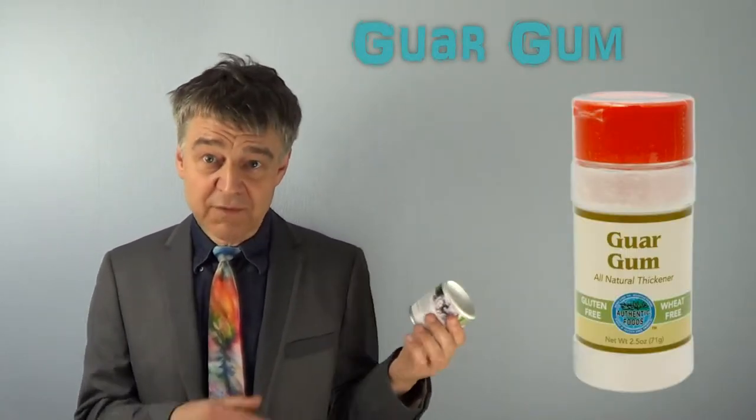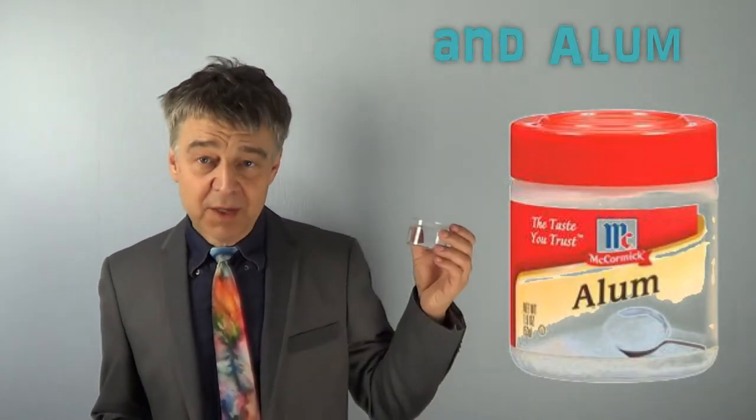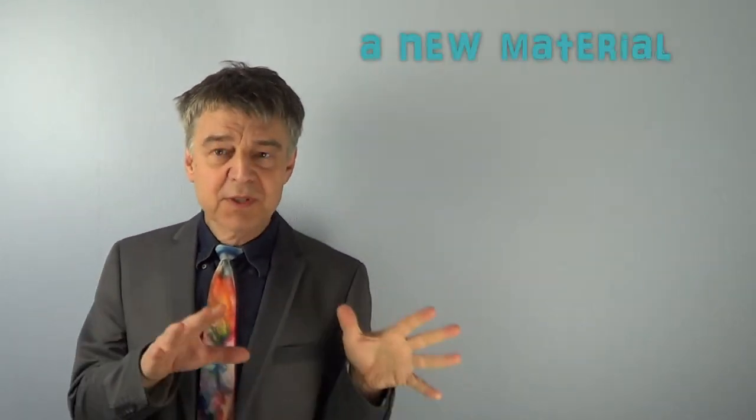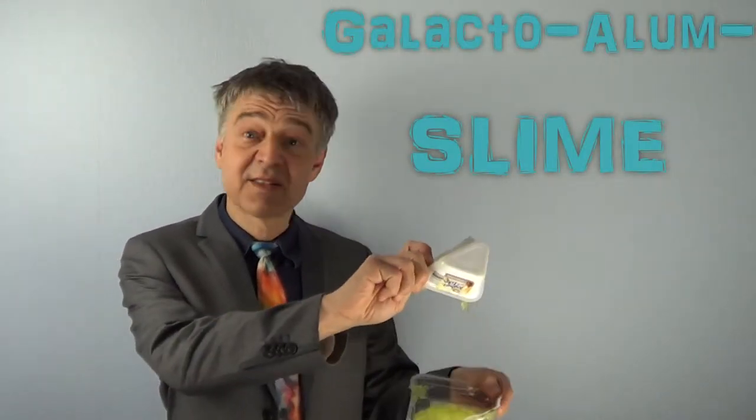Starting with guar gum, a vegetable product, and alum, a mineral, we want to synthesize a material that is viscoelastic, showing both liquid and solid properties. Well, we can just call it slime.